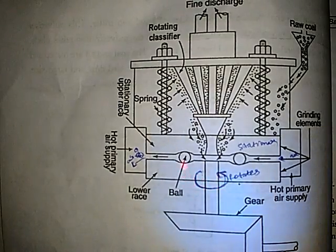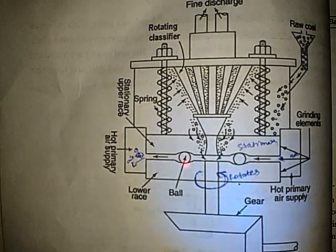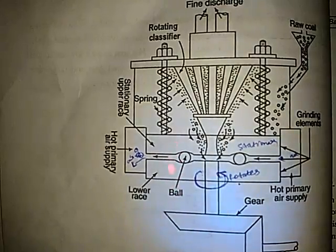In between the stationary upper race and rotating lower race a metal ball is situated. This metal ball due to its relative velocity between these races creates a crushing action which crushes the coal.